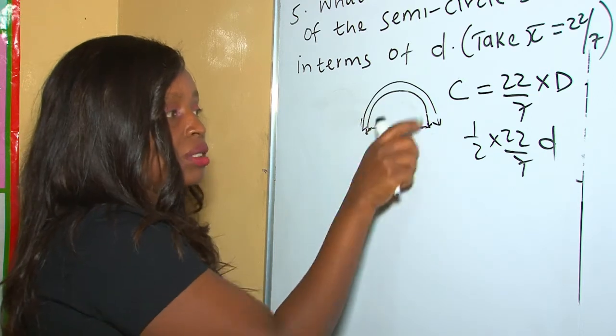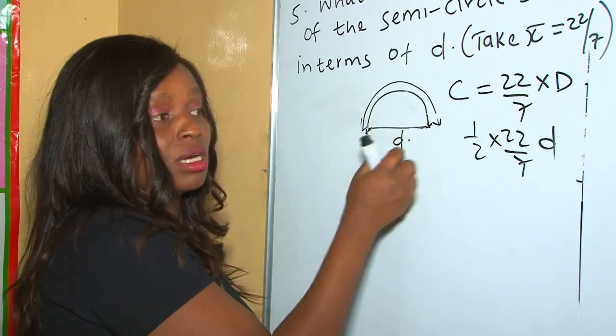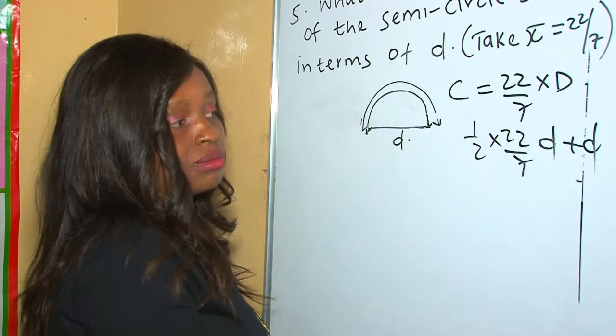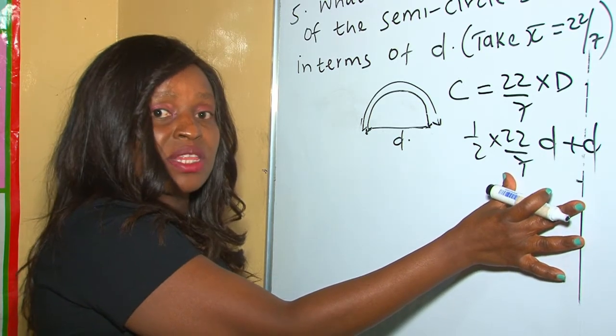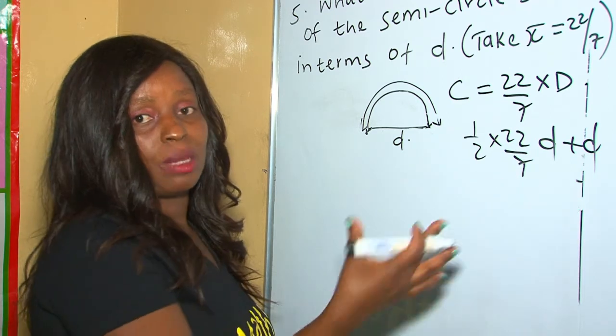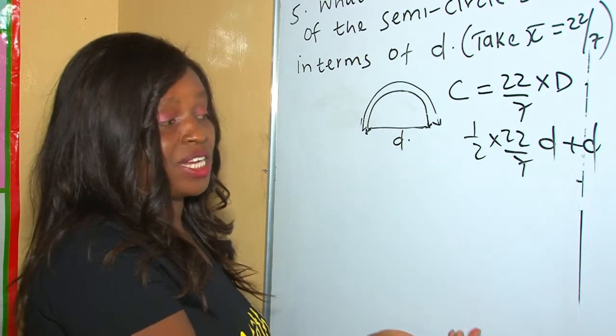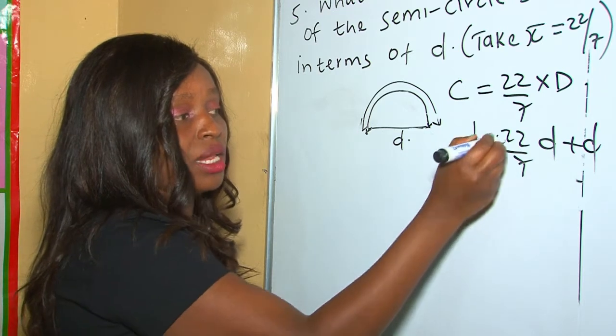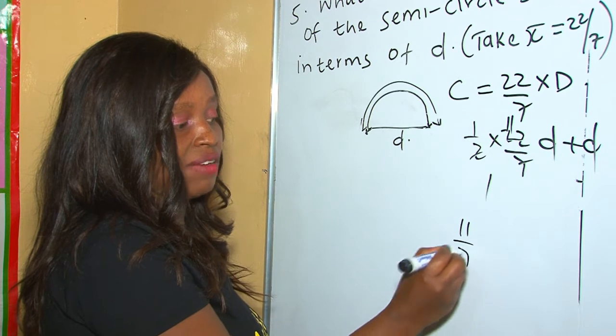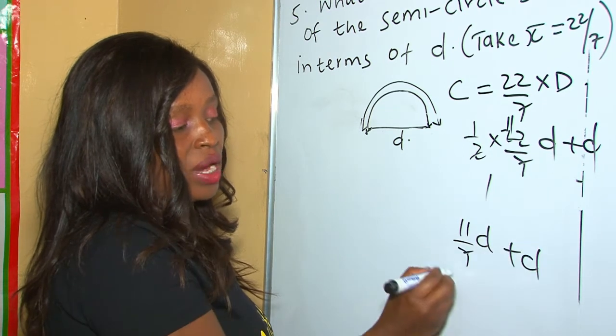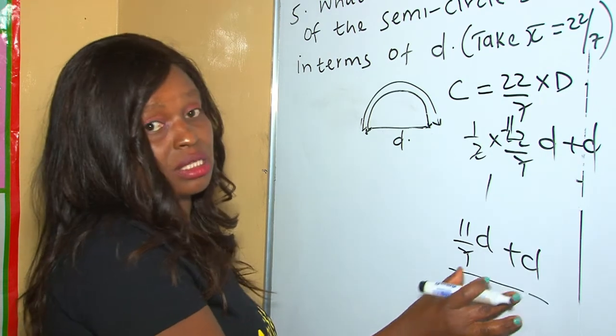So now we have calculated the circumference of the semicircle up to this point, passing through here. To finish the journey going around the whole shape, we add the diameter. Therefore, plus the diameter. You can leave your answer like this. Remember, we said when coming up with the algebraic expressions, you don't need to simplify. Or you can go one step further and divide here by 2, 1 by 2, 11, and your final answer shall be 11 over 7 d plus d. Whether you leave answer like this, it is also correct.